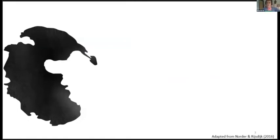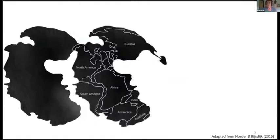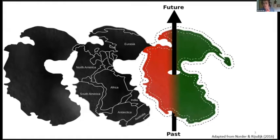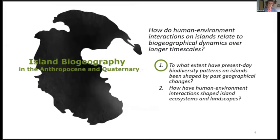The answer is Pangea — 225 million years ago, all continents were merged into one big landmass called Pangea. He uses this as a metaphor to illustrate that he studies islands as model systems to understand ecosystems and species distribution patterns at wider scales, from the past towards the present and maybe towards the future. His PhD thesis was about island biogeography in the Anthropocene and Quaternary. He was mainly interested to understand how human-environment interactions on islands relate to biogeographical dynamics over longer time scales.